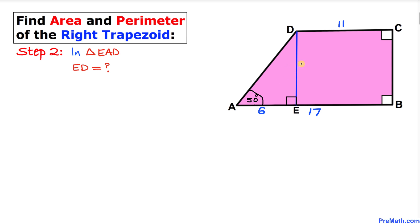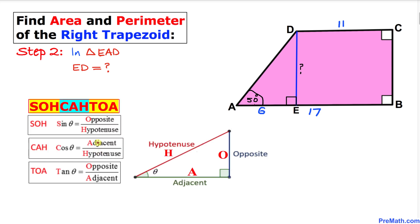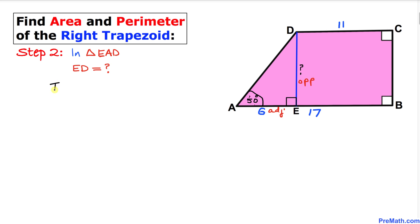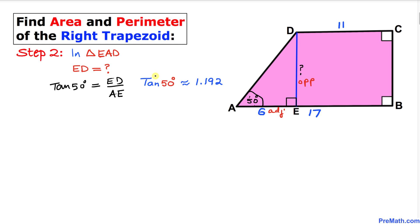Now let's focus on right triangle EAD to find the length ED. We will use trigonometric ratios — specifically tangent, which equals opposite over adjacent. Our angle is 50 degrees, so the adjacent side is AE and the opposite side is ED. Therefore we can write: tangent of 50 degrees equals ED divided by AE, and tangent of 50° is approximately 1.192.